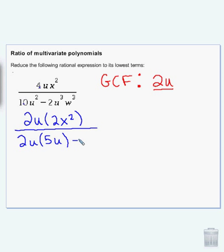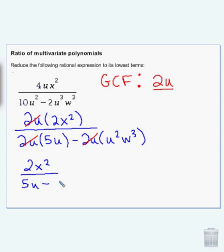And then if I take 2u from 2u to the third w to the third, I'm left with u squared w to the third. I can cancel my 2u from each term, leaving me with the final answer of 2x squared over 5u minus u squared w to the third.